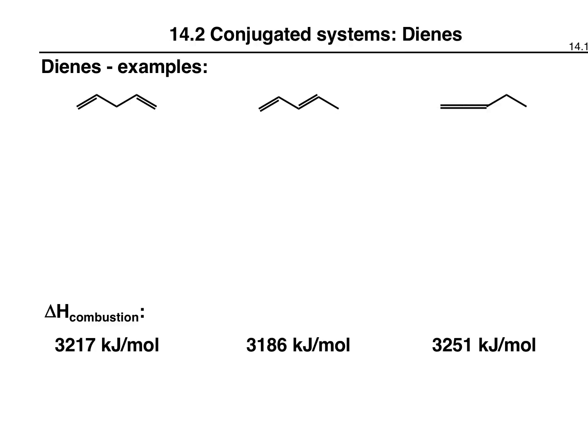On this slide we have a few examples of dienes. A diene has two alkenes; we could also talk about trienes, tetraenes, polyenes, but we're going to focus on dienes for now. In the first example, we have sp2 hybridized carbons, but in between we have a carbon that is sp3 hybridized. This is called an isolated diene because the alkenes are isolated from each other, separated by an sp3 hybridized carbon.